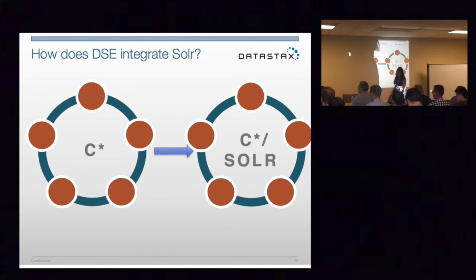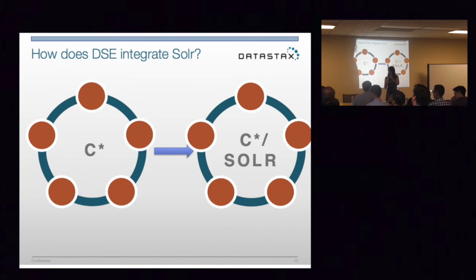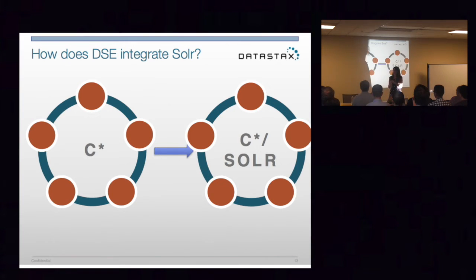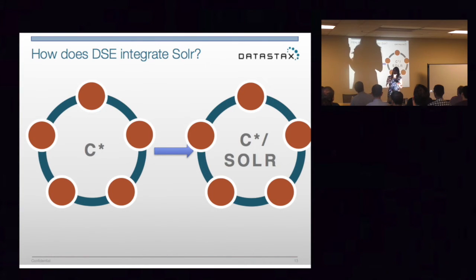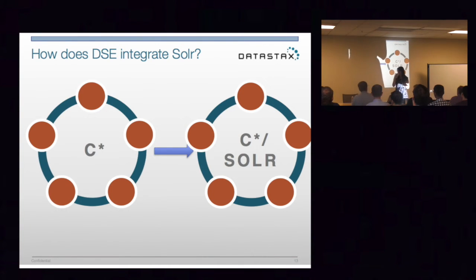The question is: when you look at Solr versus Elasticsearch, is it just a business decision early on? Why didn't we integrate Elasticsearch? It was a business decision early on. I like the fact that we're working with more pure products — Solr source indexes. And Solr was more established at the time.